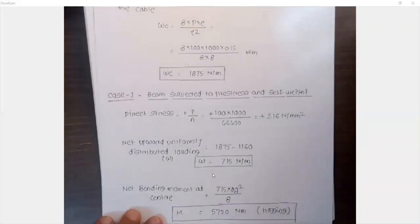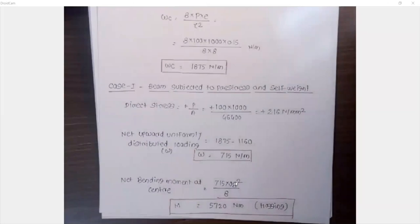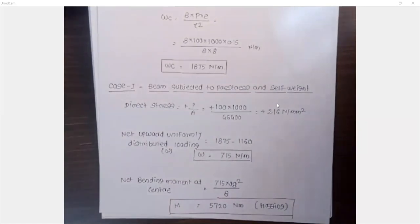The net bending moment at mid-span using WL²/8 comes out to 5,720 Newton-meter, acting as hogging. This is because the upward force transmitted by the tendon is higher than the self-weight of the beam.